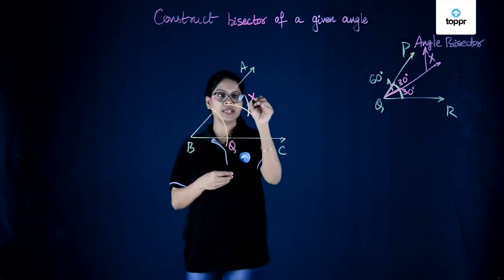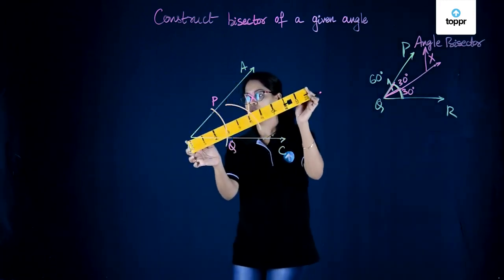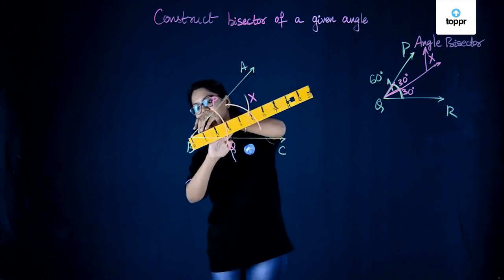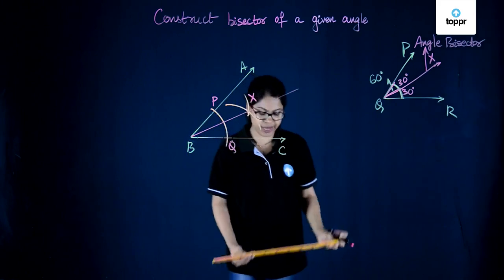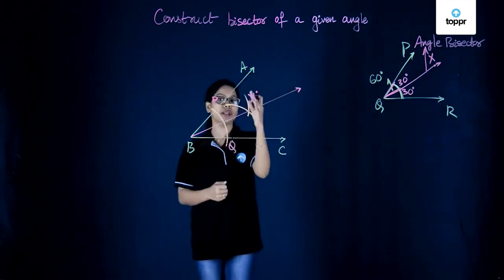Let this point be point X. All we need to do now is join BX. Now joining BX gives us ray BX which is the bisector of angle B or angle ABC.